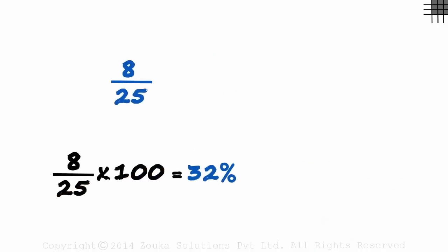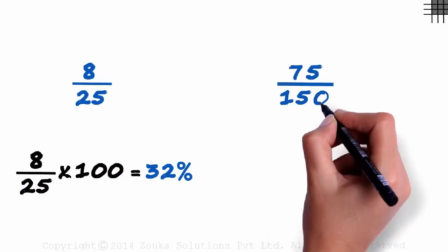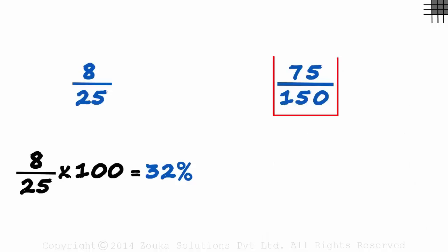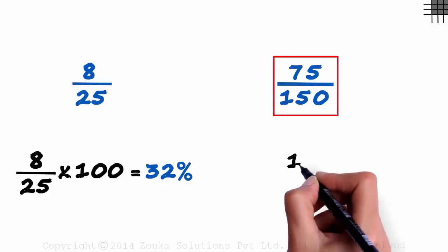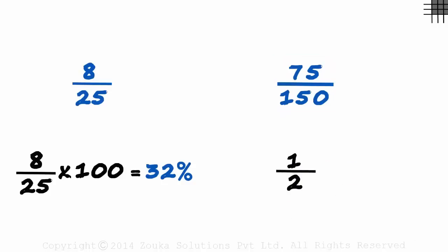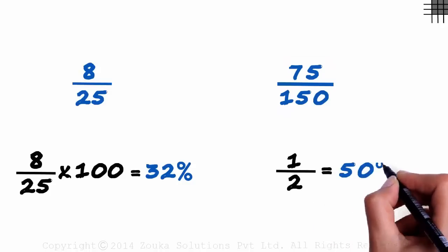Here's another one: 75 by 150. How do you convert it to percent terms? You multiply it by 100, correct? Wait, look carefully. You don't really need to. This is actually 1 by 2, or half. Half is 50 percent.